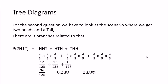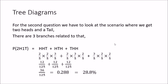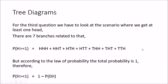For question two — getting two heads and a tail — there are three branches: head-head-tail, head-tail-head, and tail-head-head. We calculate the probability of each branch: 2/5 × 2/5 × 3/5 = 12 over 125, and there are three such branches. Adding them together gives 36 over 125, or 0.288. So there is a 28.8% probability of getting two heads and a tail.